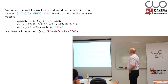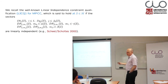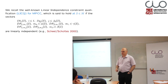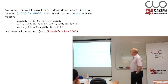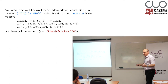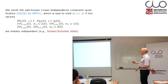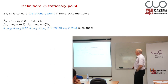We will also call the linear independence constraint qualification for MPCCs, which only means all active constraints form a set of linearly independent gradients. That is what we need for differential geometry.